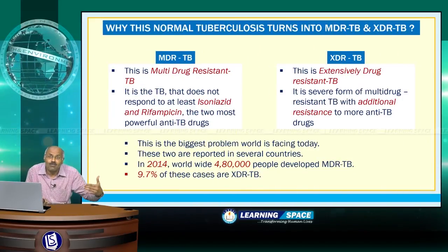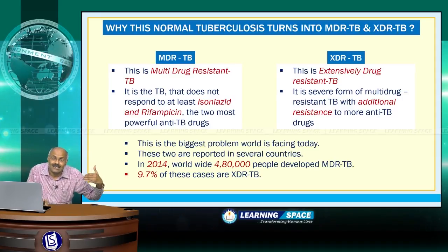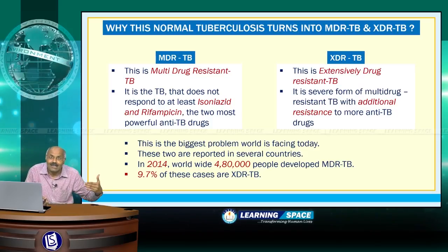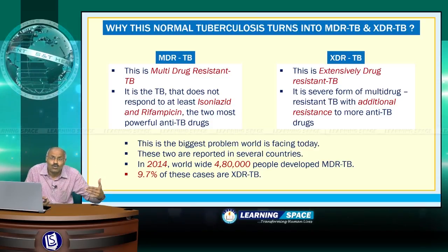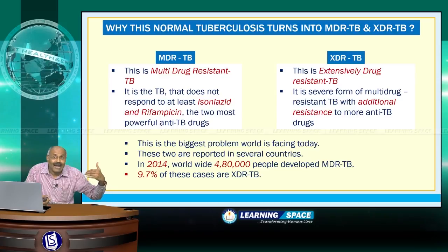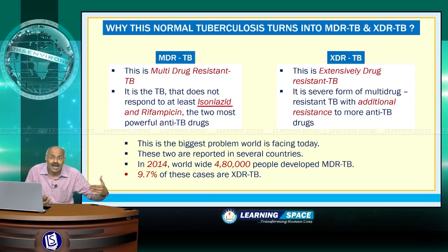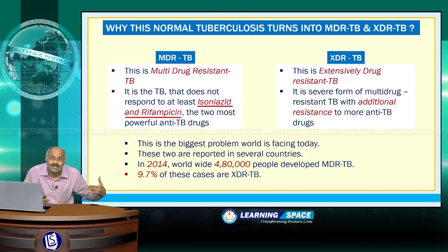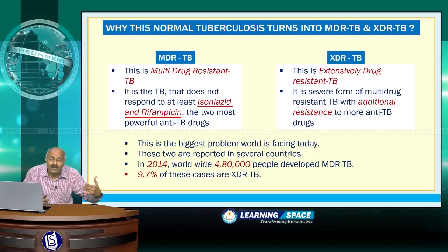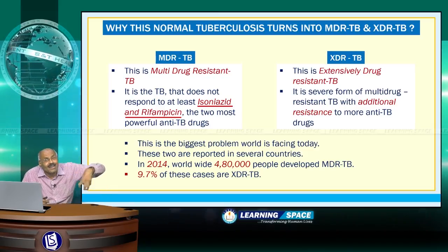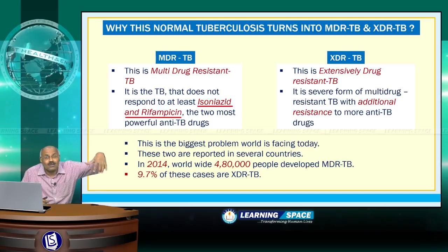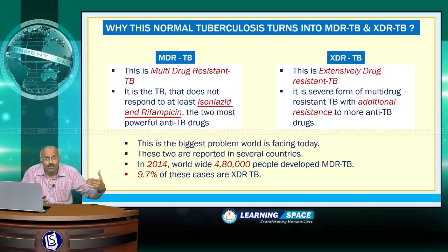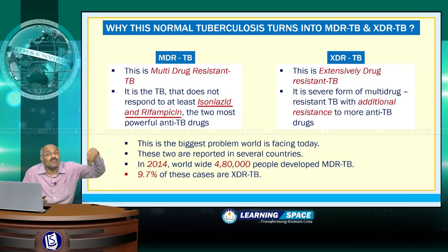Normal tuberculosis can turn into multi-drug resistant TB (MDR-TB) or extensively drug resistant TB (XDR-TB). MDR-TB is TB that does not respond to at least two powerful anti-TB drugs: isoniazid and rifampicin. XDR-TB is a serious form of MDR-TB with additional resistance to more anti-TB drugs. Both MDR-TB and XDR-TB pose the biggest challenge to the medical fraternity today and are reported in several countries across the world.